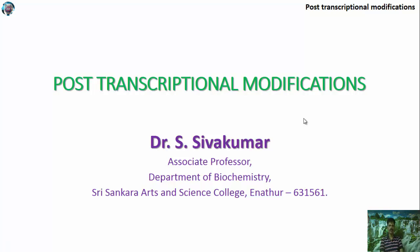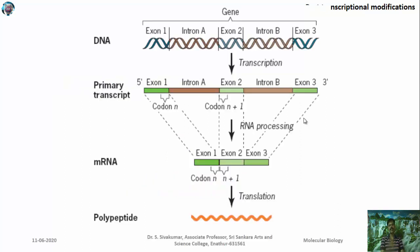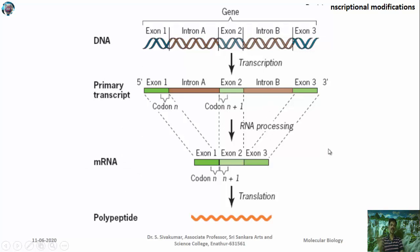Welcome to the third section of the fourth unit of molecular biology. Today's topic is post-transcriptional modification, which occurs after transcription. DNA is transcribed into a primary transcript or nascent RNA, which undergoes RNA processing to produce a functional mRNA, and this mRNA is then converted into a protein. This presentation focuses on how the primary transcript is converted into functional RNA.